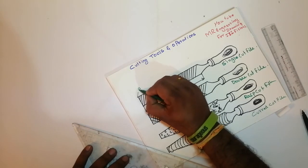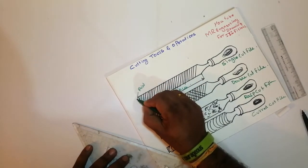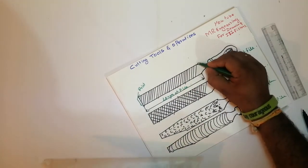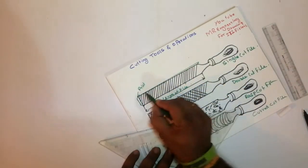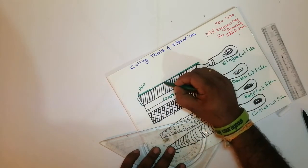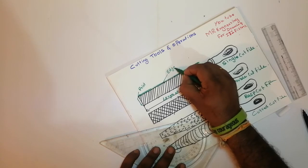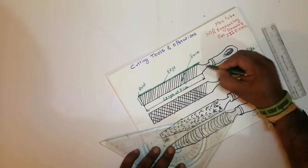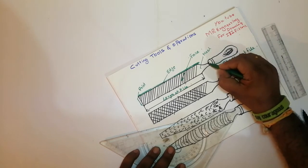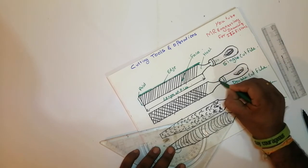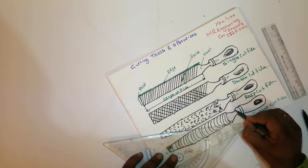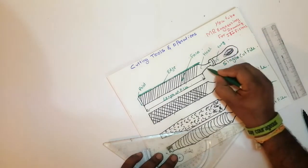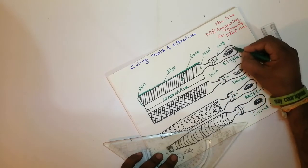This is called the point — I am showing it in green. This is called the point. This is one more curve line. What I am shading is called the edge. This is the face — see the arrow mark, it is the face. This is the heel. Here is a dotted line — the throat handle. This is called the tang. This is called the pearl. This is called the handle.